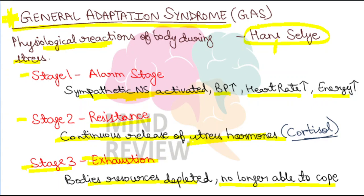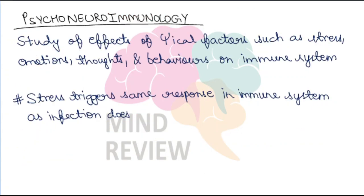Hum poori koshish karte hain ki hum us event se bach jayein, stress ko kam kar lein. But eventually stage 3 aata hai jis mein aapki body ho jaati hai exhaust. The resources of the body deplete — your body is no longer able to cope up with that stressful situation, kyunki wo continuously stress hormones release kiye ja rahi thi. Now body ke saare resources khatam ho chuke hain aur now my body is not able to fight with that stress.